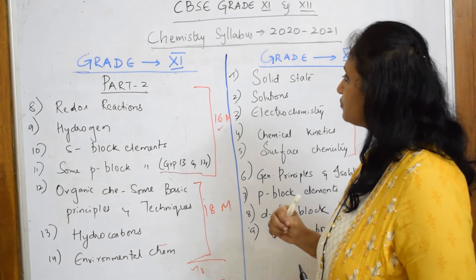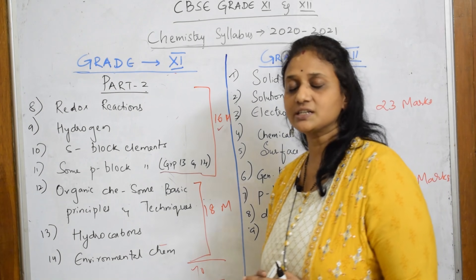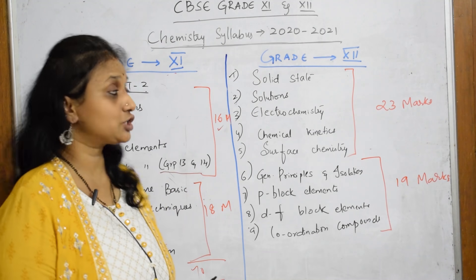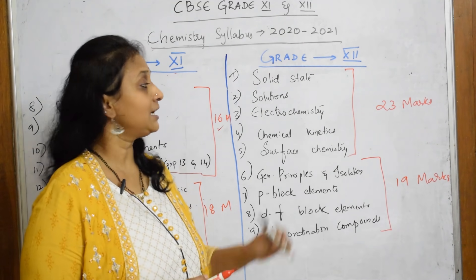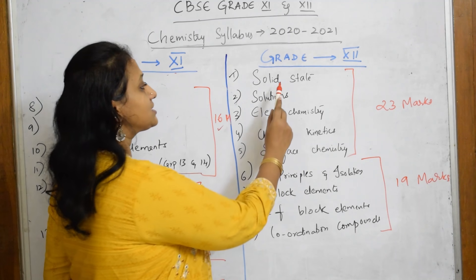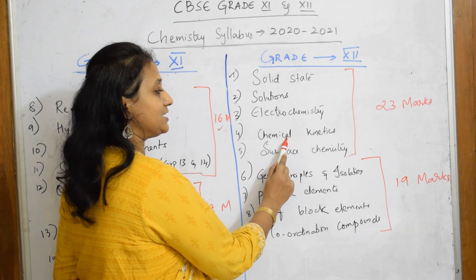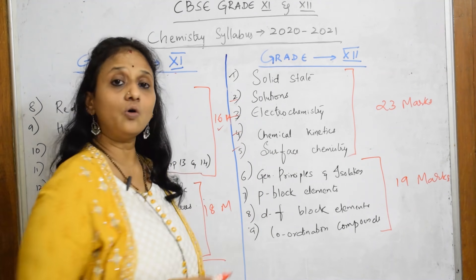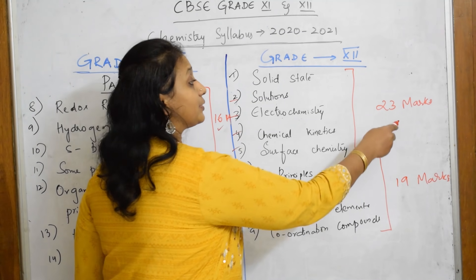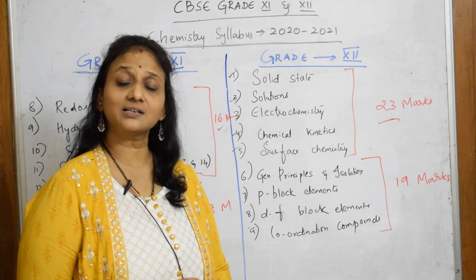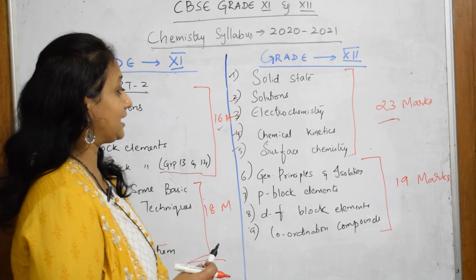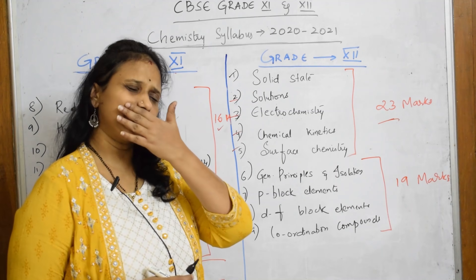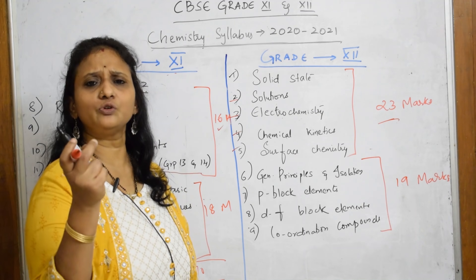So grade 11 is clear. To conclude for grade 11: there is no Solid State and no P-Block group 15 in grade 11. Now coming to grade 12 CBSE — as usual, Solid State has come back. The chapters are: Solid State, Solutions, Electrochemistry, Chemical Kinetics, and Surface Chemistry. These five chapters together are allocated 23 marks — that is the physical chemistry section.